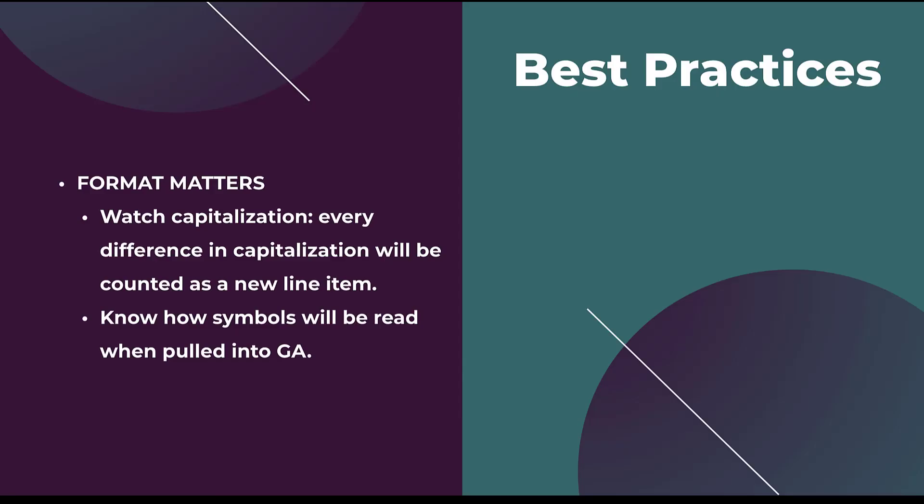The next best practice is to remember that your format matters. Watch your capitalization — because every time you have a difference in capitalization, it is treated differently, even if it says the exact same thing. Google as a source, all lowercase, is going to show up as a different line item than Google with a capital G at the beginning. Additionally, know how different symbols are going to be read — if you put different types of markings and symbols into your parameters, they may show up differently. So if you're thinking about using some type of special character within your tracking parameters, do some research and figure out how Google Analytics or your CRM will read that symbol before utilizing it.